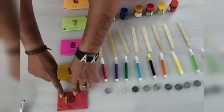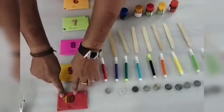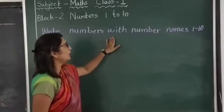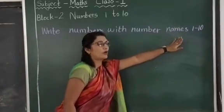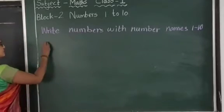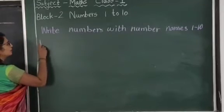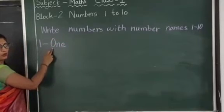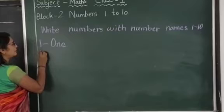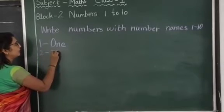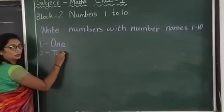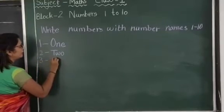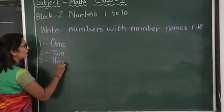So we have learned 6, 7, 8, 9, 10 — counting numbers and number names. Now write numbers with number names. Let's go in line: 1 — O, N, E; after 1 comes 2 — T, W, O; after 2 comes 3 — T, H, R, E, E.